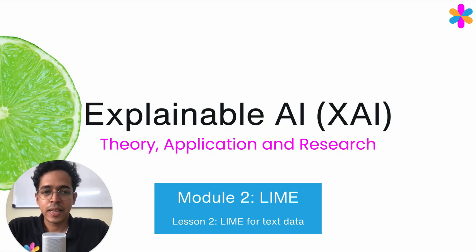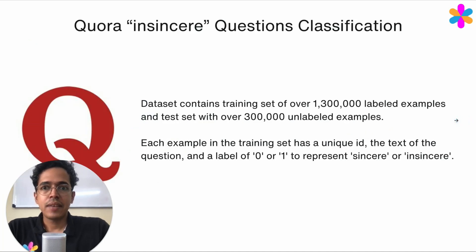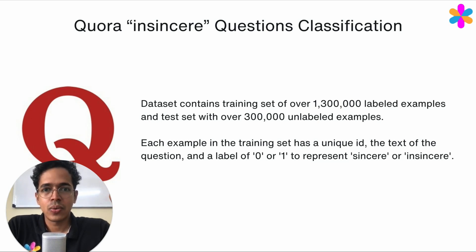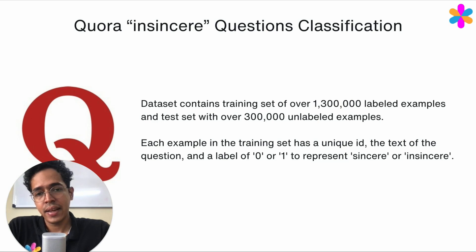Hi, welcome to the Explainable AI course. In this lecture, let's look at how we can implement LIME for text-based data. The dataset we are using is the Quora dataset — there are a lot of questions on the platform Quora, and some of the questions are insincere, like just for spamming or trolling. This dataset, which we'll use from Kaggle, has almost 1.3 million labeled data points in the training set.